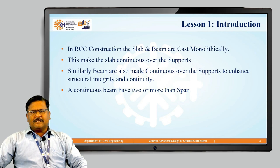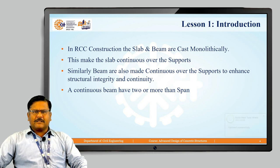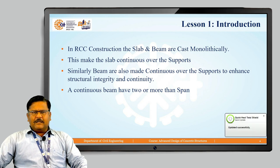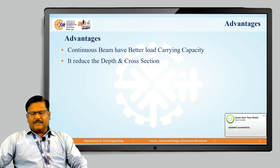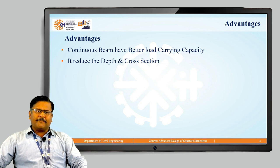What is RCC? What is a continuous beam? In RCC construction, the slab and beams are cast monolithically. This makes the slab continuous over the supports. Similarly, beams are also made continuous over the supports to enhance structural integrity and continuity. A continuous beam has two or more spans. The advantages of a continuous beam are that it has better load carrying capacity than a simply supported beam and it reduces the depth and cross-sectional area of the beam.